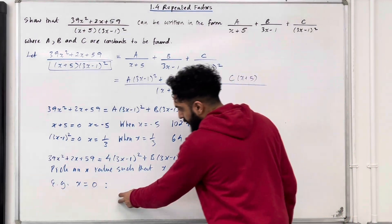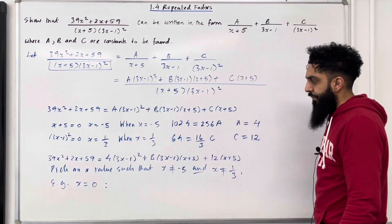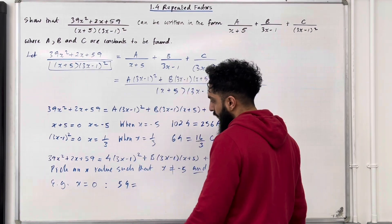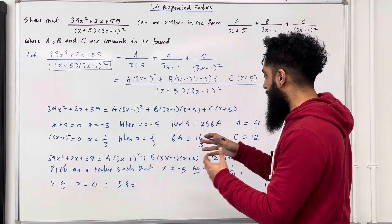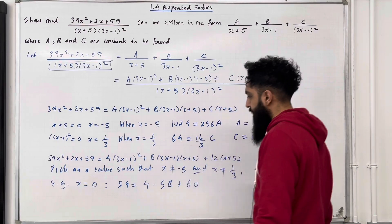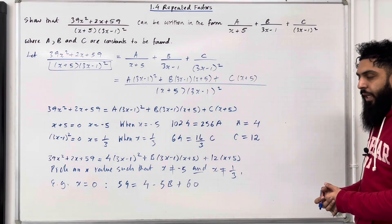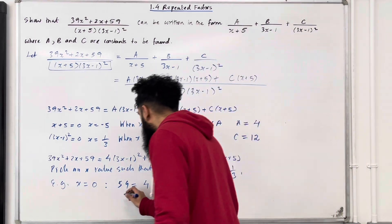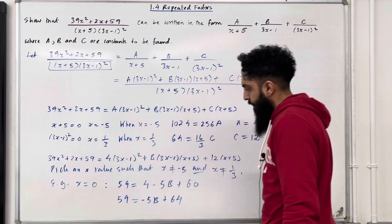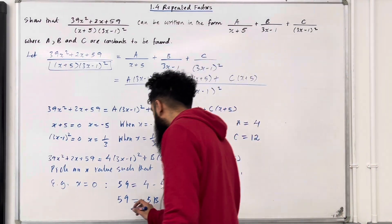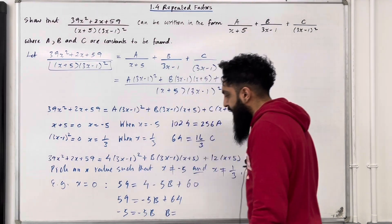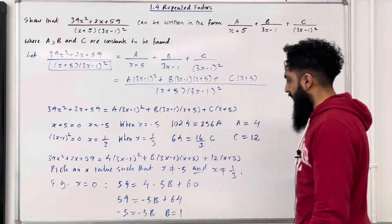Substituting x = 0 into both sides generates an equation in B. On the left-hand side we get 59, and on the right-hand side we get 4 − 5B + 60. Simplifying: 59 = −5B + 64, so −5 = −5B, hence B = 1.